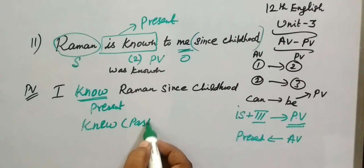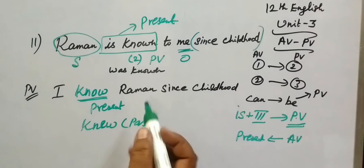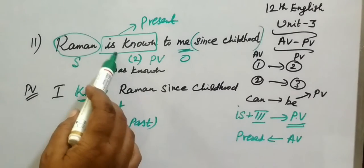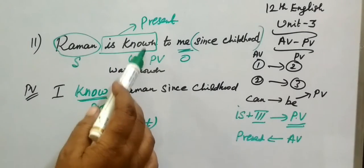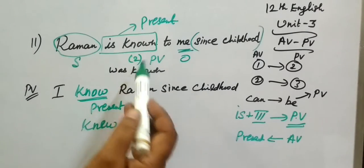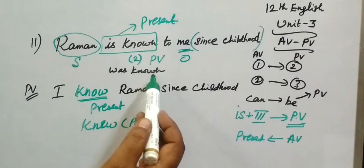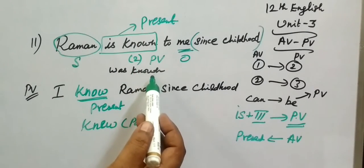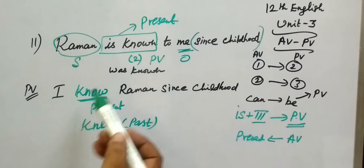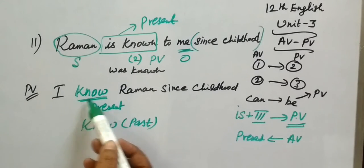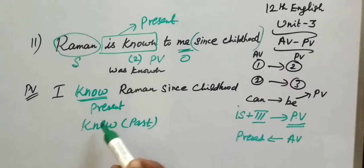So: 'is known' means present tense — use 'know.' 'Was known' means past tense — use 'knew.'